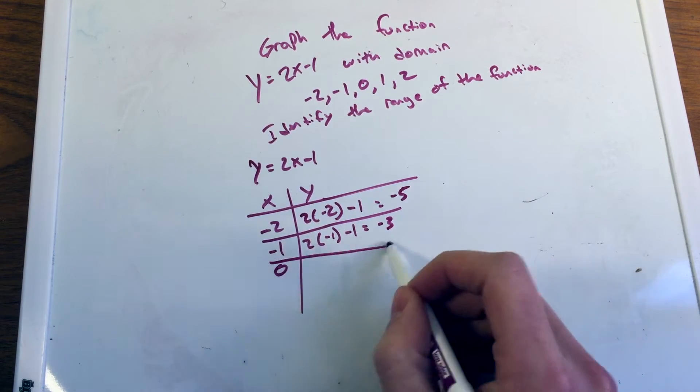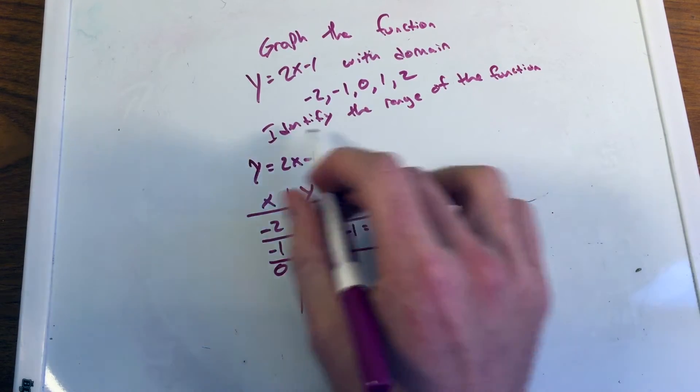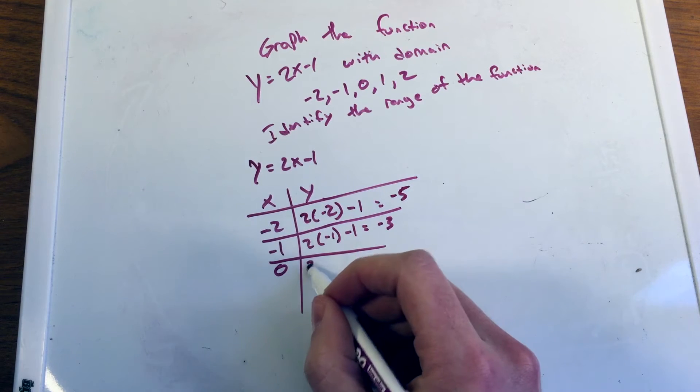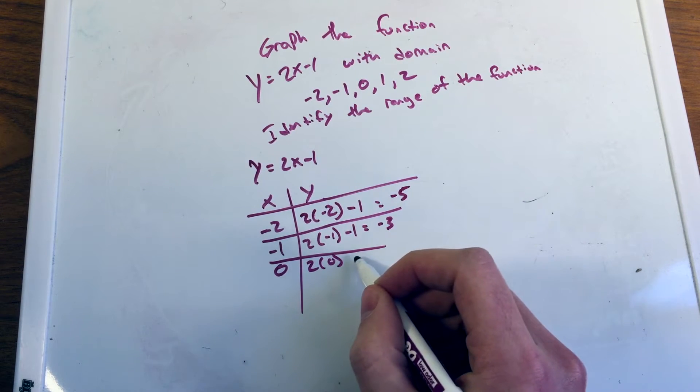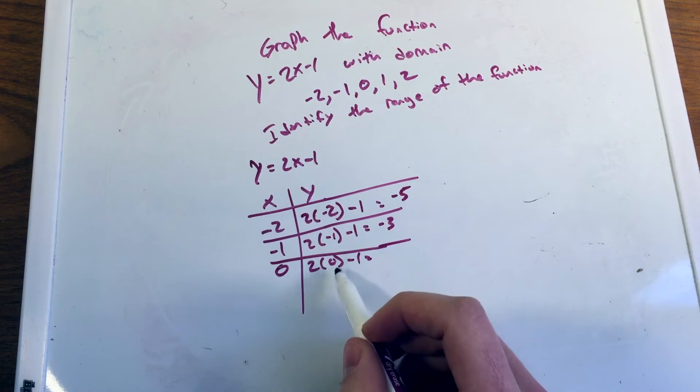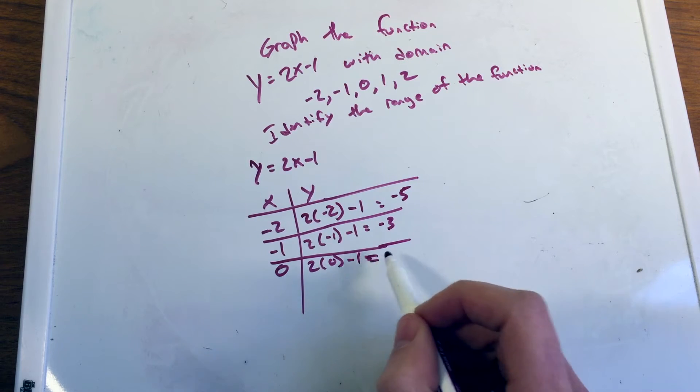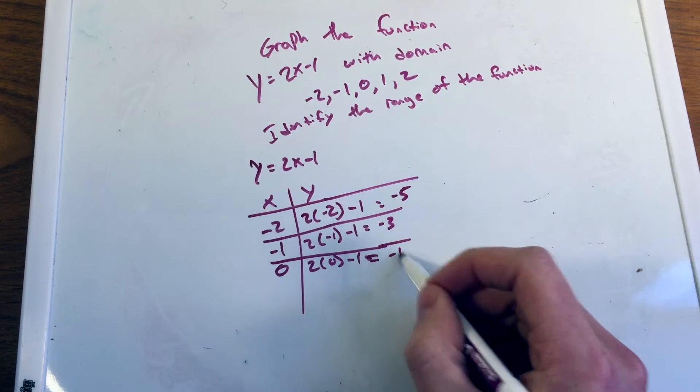Plug in 0 for the next value here, 0 in for x, again into this initial equation. 2 times 0 minus 1. And I love when 0 is for x, it makes it very simple to solve. So 2 times 0 is 0, minus 1 is negative 1.